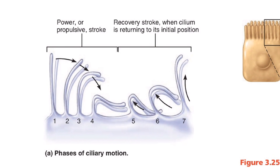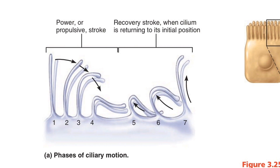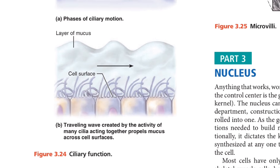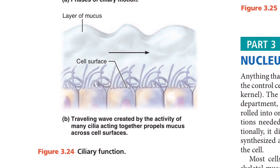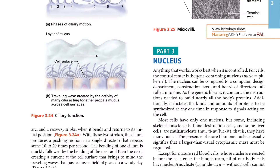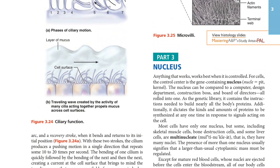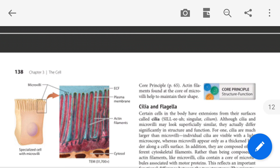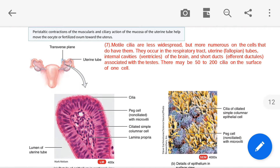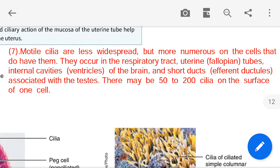In this figure, the phases of ciliary motion are shown: the power or propulsive stroke and the recovery stroke. The recovery stroke is when the cilium returns to its original position. Due to ciliary movement, a layer of mucus is propelled — a traveling wave created by many cilia acting together pushes mucus across the cell surface.